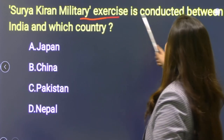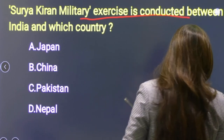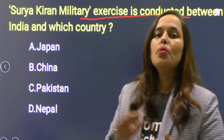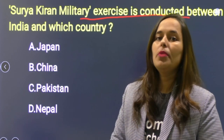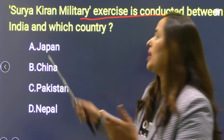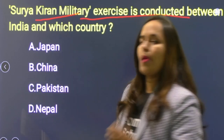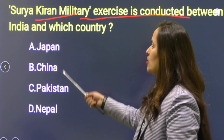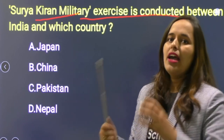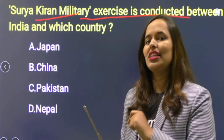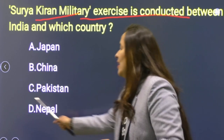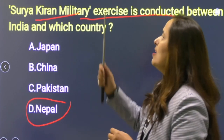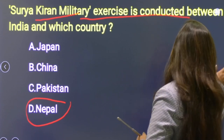Next: Surya Kiran military exercise is conducted between India and which country? जो military exercises दो countries आपस में conduct करती हैं — इसी में Surya Kiran military exercise है। Options: Japan, China, Pakistan, Nepal. Correct answer is D — Nepal। India और Nepal के बीच में यह Surya Kiran military exercise conduct हुई है।